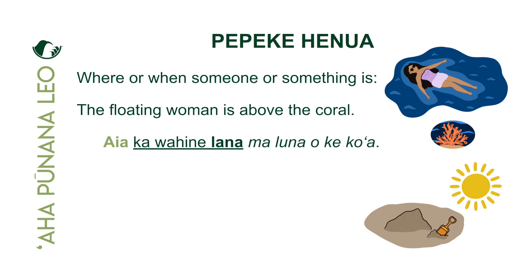Maika'i, let's confirm. A pololei no — aia is the po'o, marked in green. The piko is underlined: ka wahine. Remember we also have the kahulu in the piko position describing the piko — ka wahine, what kind? Wahine lana. Where? Above what? Maluna o ke ko'a. Let's say the entire sentence together: Aia ka wahine lana, maluna o ke ko'a. The floating woman is above the coral.